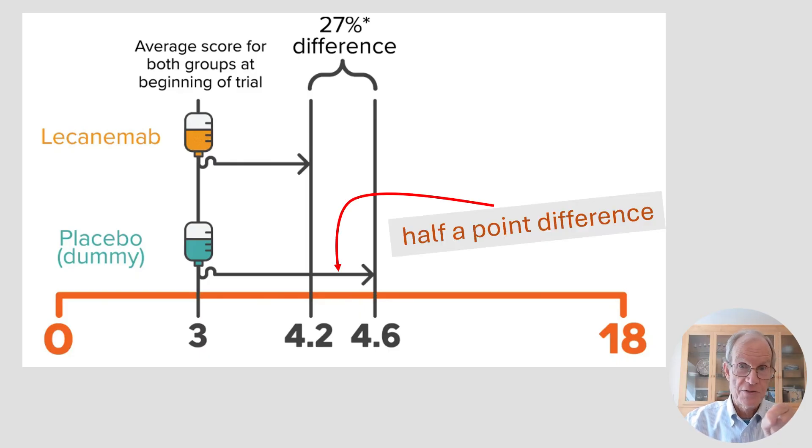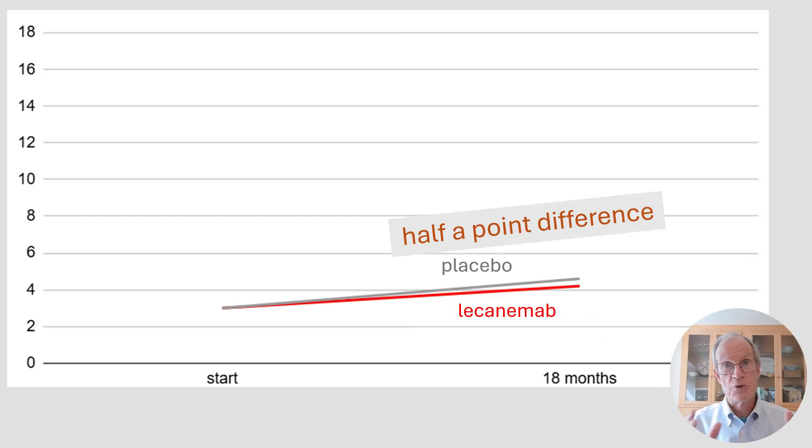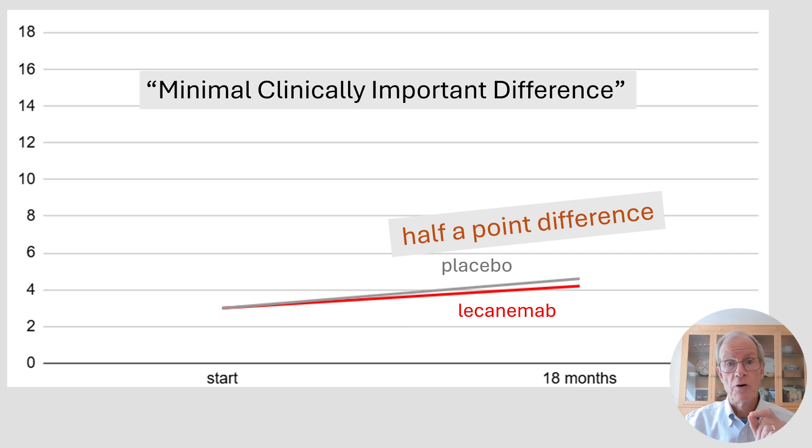But if we take this difference and then show it up on the 0 to 18 scale, this half a point of difference that we see here, it looks like this on the 0 to 18 point scale. A half a point difference is not very big on this scale. And there's actually a way of thinking about, is it half a point? How big is a half a point on this scale? And that's called the minimal clinically important difference. This is from other studies saying, how big a change in this particular scale, the clinical dementia rating scale, how big a change do you need in order to be able to see it?